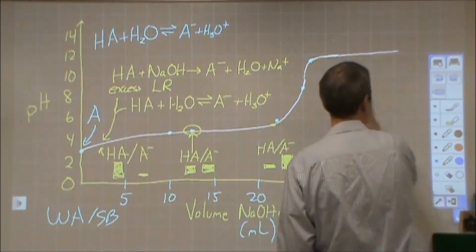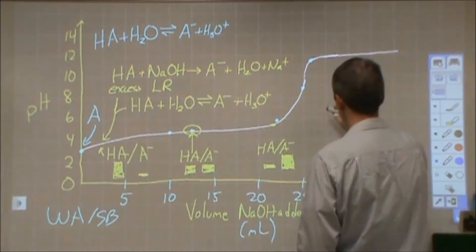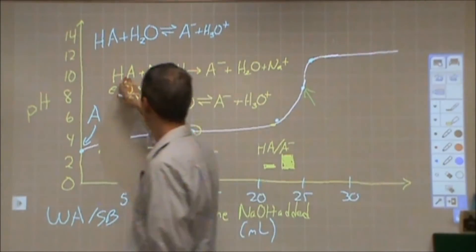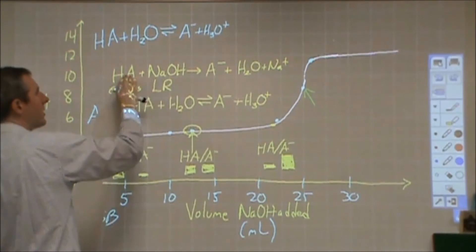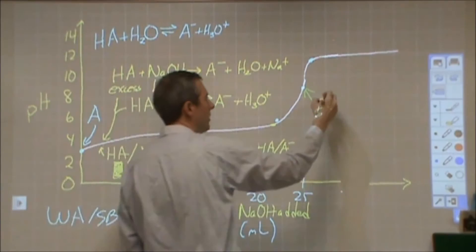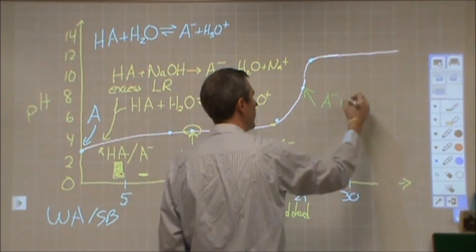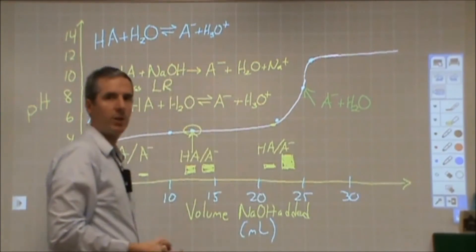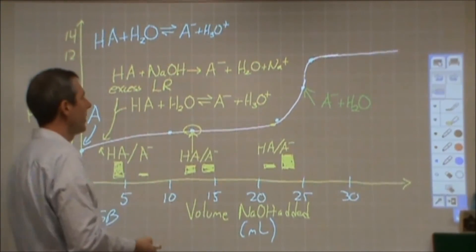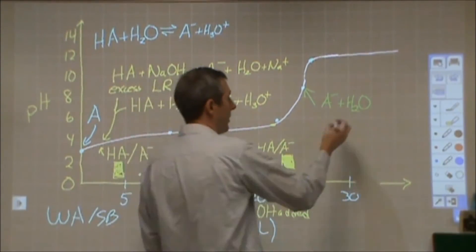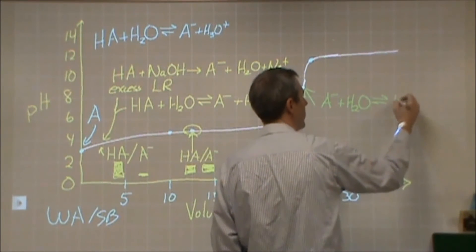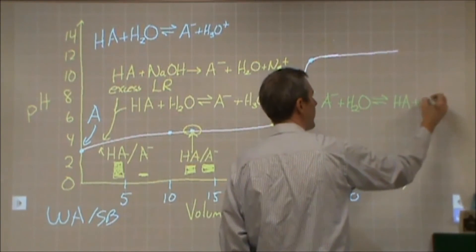When I get to point D — the equivalence point — HA is no longer in excess. I've added exactly equivalent amounts of NaOH and HA: both are neutralized, and all I have is A⁻ and water. You can think of it as a salt solution — in this case, sodium acetate. That conjugate base is going to react with water in an equilibrium fashion, and I end up with some weak acid and hydroxide.